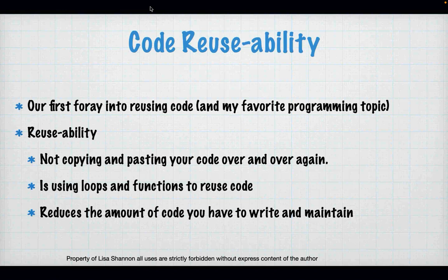This is our first foray into reusability. You'll find out through the next several weeks that reusability is one of my favorite topics in programming. Reusability — if you write your code right — means you end up writing less code. Reusable things include functions, objects, and loops. Reusability is about data-driven code: writing one function, one loop that can handle a lot of different data input.